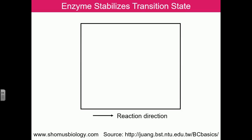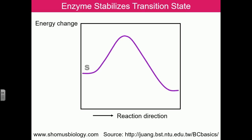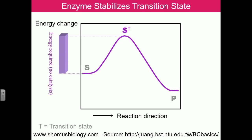Looking at this graph: the x-axis shows the reaction progress and the y-axis shows the energy change. Starting with substrate S, when it interacts with the enzyme it forms the enzyme-substrate complex. We'll first look at the situation where only the substrate is present without any enzyme. In this case, the transition state of the substrate is labeled S‡, and the energy required to reach it — without any catalysis — is the amount of energy needed for the reaction to proceed forward from substrate to product.